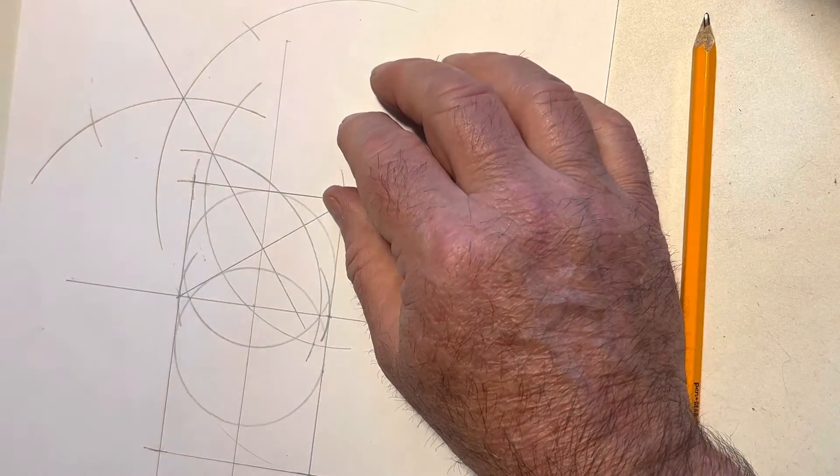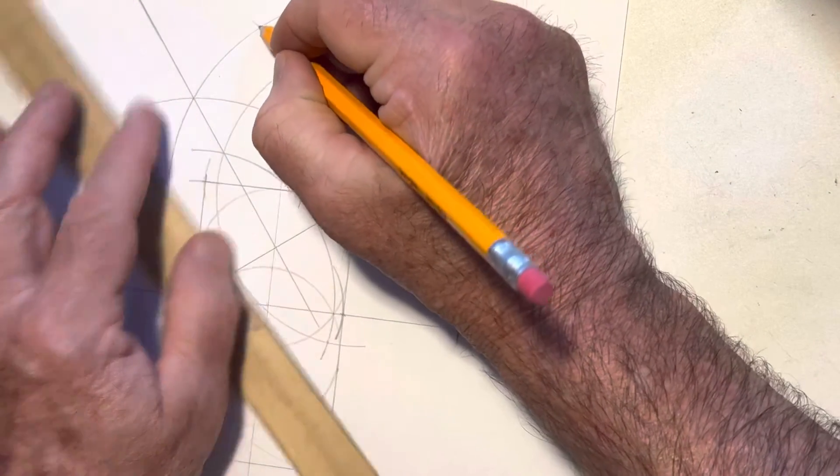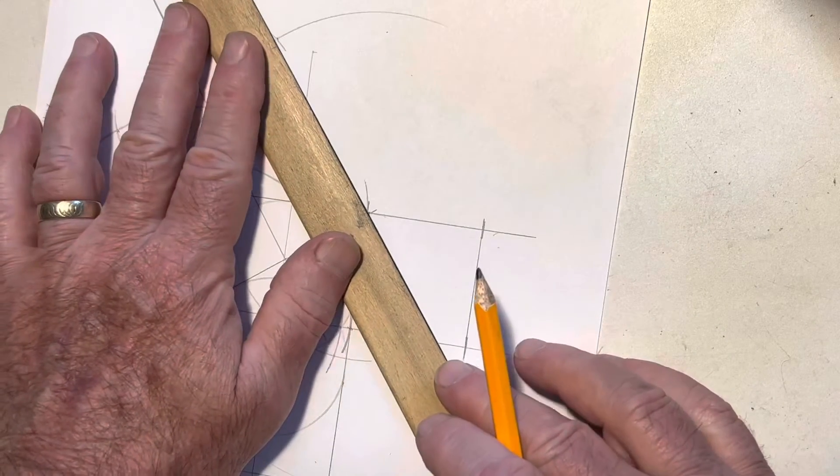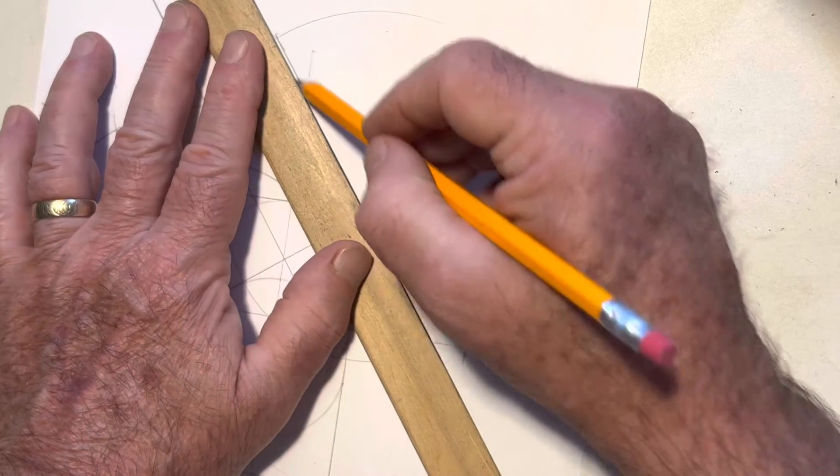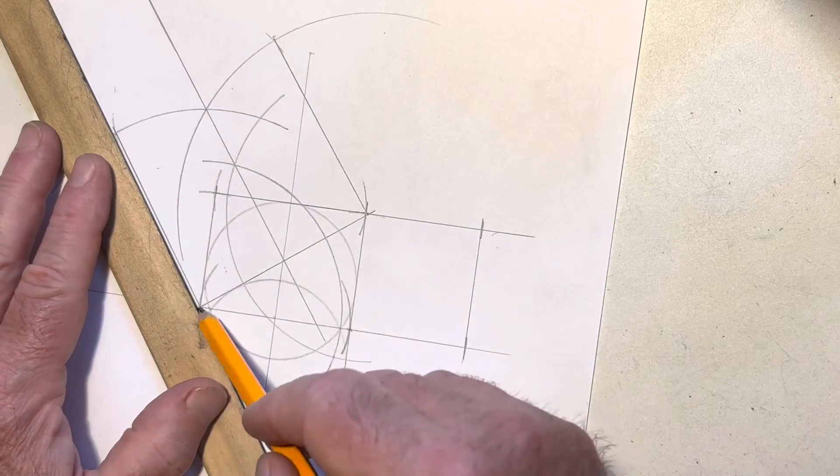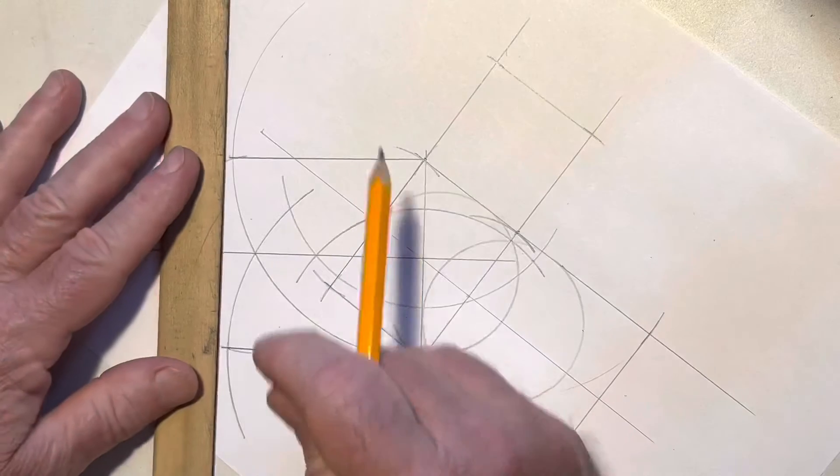And I make my two marks there. Now I'm going to connect these points to this. Remember, this is a point here and now a point here. I'm going to connect those. And I can come over here, I'm going to connect these two points here.